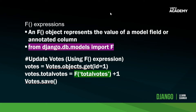Let's look at how we can implement the F expression into this simple example. An F object represents the value of a model field or annotated column. Before utilizing F expressions we need to import it from models: from django.db.models import F. Here, votes.total_votes equals the F expression wrapped around the actual table field, and then we have the increment at the end.